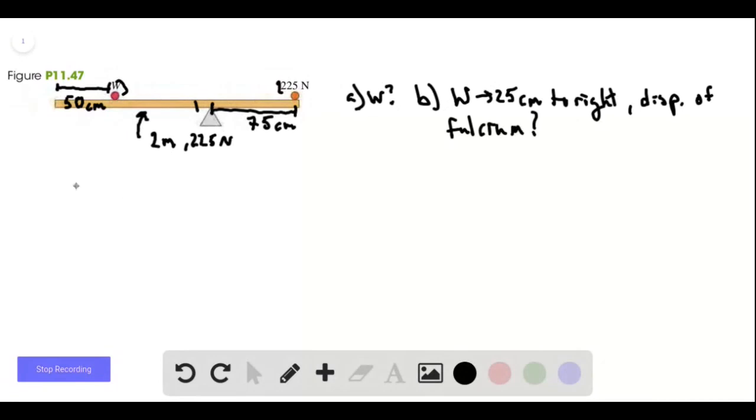So the center of mass has to be at the fulcrum and we know this is 1.25 meters from the left side, which is where we'll put our origin.